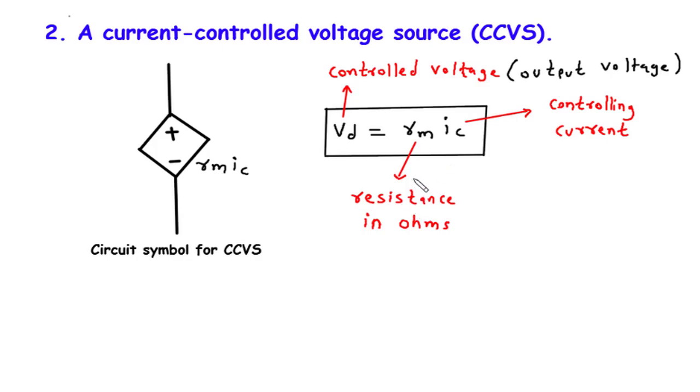The resistance RM plays a crucial role in determining the voltage output, with higher values resulting in larger voltages and vice versa.